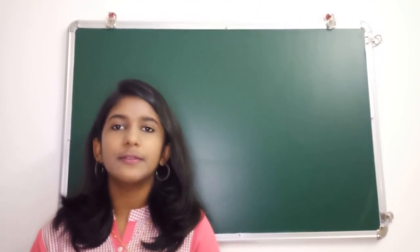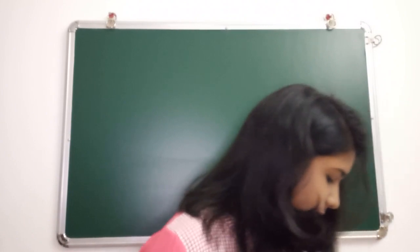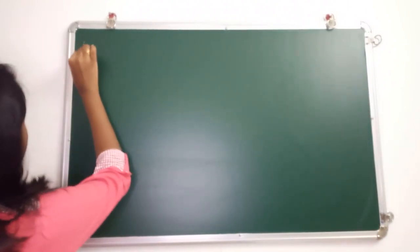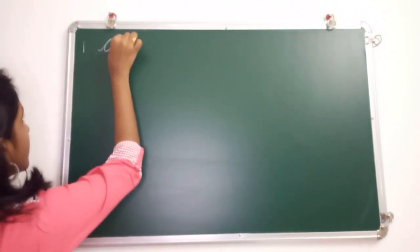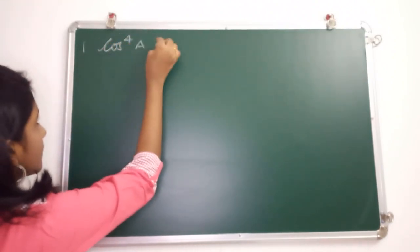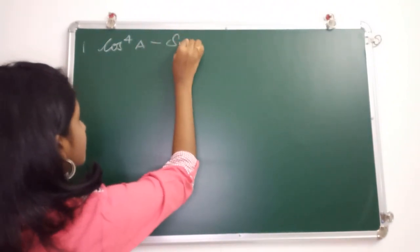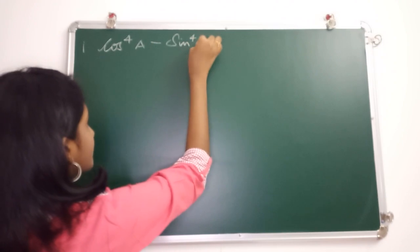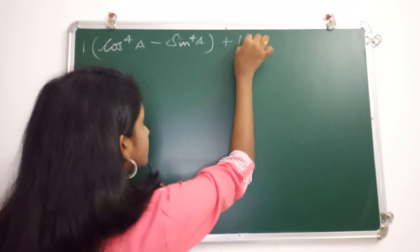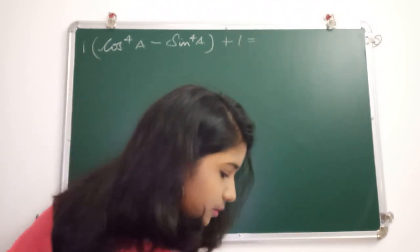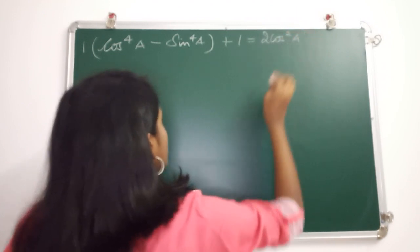In this video we will be coming up with some trigonometric proofs. Let us get into the first question: cos⁴A minus sin⁴A plus 1 is equal to 2cos²A.